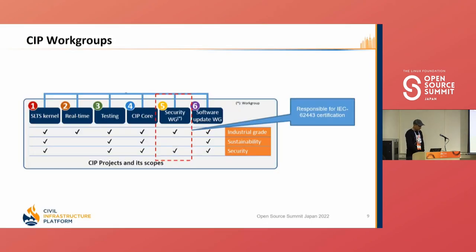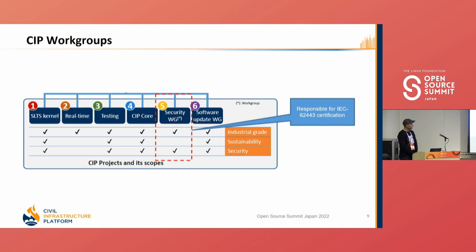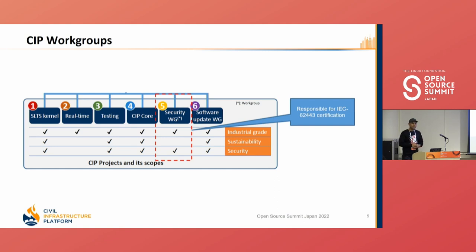CIP is supported by multiple work groups: the CIP kernel work group, testing work group, CIP core work group, CIP security work group, and CIP software update work group. We are from the security work group, and our current focus is to get CIP certified for IEC 62443-4-1 and 4-2. The main work in CIP core is to maintain a reference image. From the security work group side, we collaborate with all work group members for meeting IEC requirements, adding additional packages and kernel configurations.